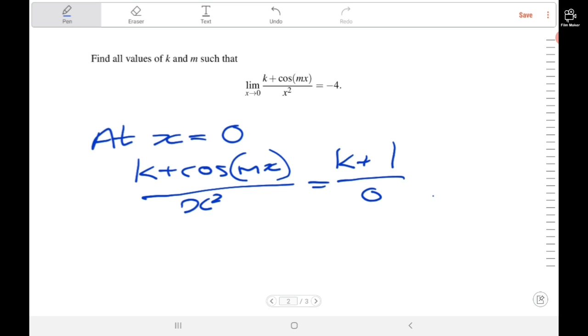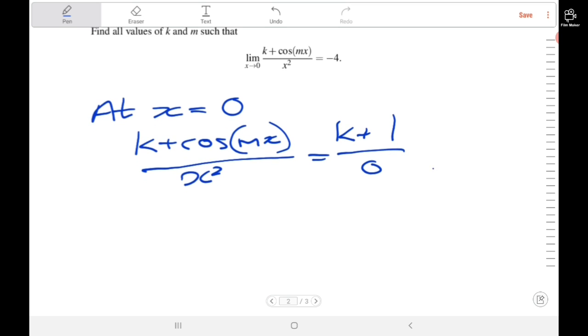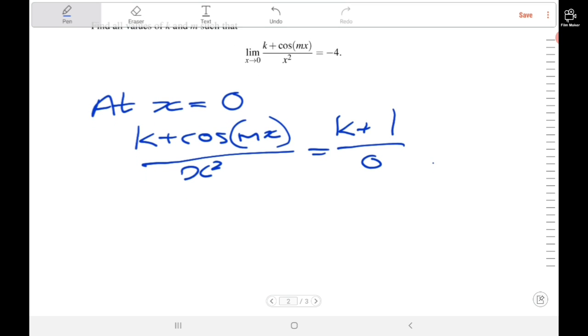So we have k plus 1 over 0 as the first indication of the behavior. If k plus 1 is not equal to 0, then we have some constant value divided by 0, which means the limit will go to either negative infinity or infinity.